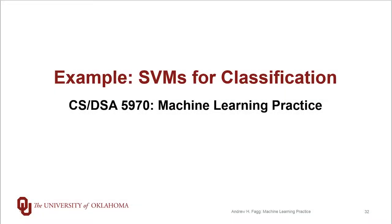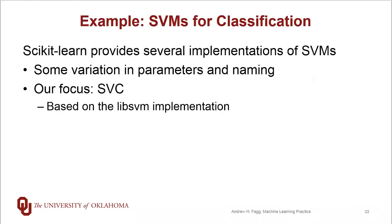We've talked about the intuition and mathematics behind support vector machines, and now it's time to play a little bit in code, at least on the classification side of things. Scikit-learn provides a variety of different implementations for SVMs. The interfaces differ depending on which implementation you're looking at. We're going to focus on something called SVC, which is based on a library called libsvm — available in C++ form, with Python and MATLAB interfaces as well.